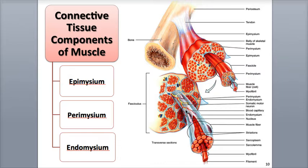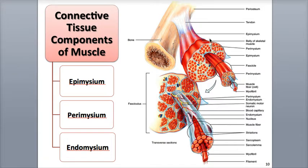The endomysium is the innermost layer and is made of reticular fibers, which have a branched, net-like arrangement. The endomysium is inside the fascicle; here one single fasciculus contains bundles of muscle fibers, each surrounded by an endomysium, which separates the individual muscle fibers from each other. All three of these connective tissue layers are extensions from and continuous with the connective tissue in the muscle's fascia and other connecting structures, such as tendons.